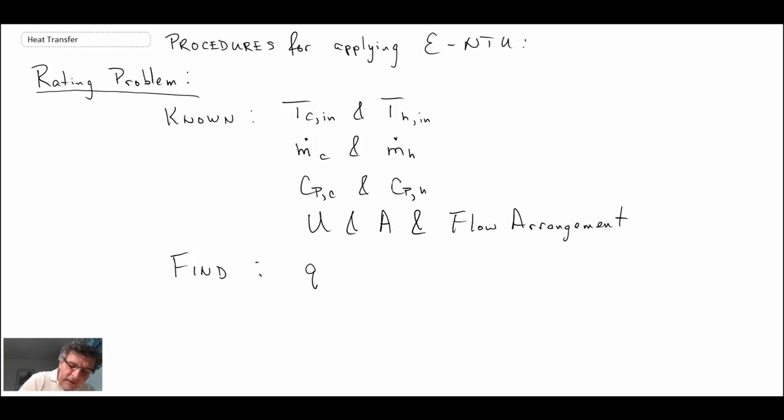And the unknowns are the heat transfer rate and the exit temperature of our fluid streams. Consequently, it becomes difficult to apply LMTD because you don't know the exit values and you have to do that iteration.